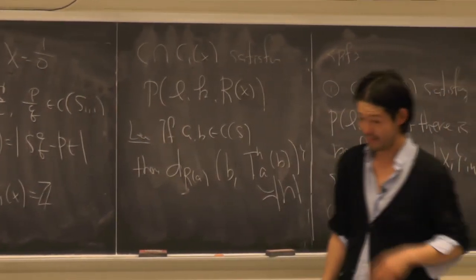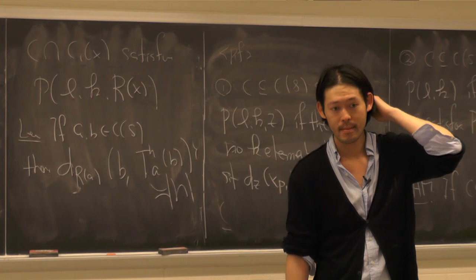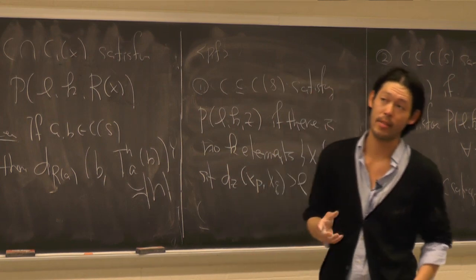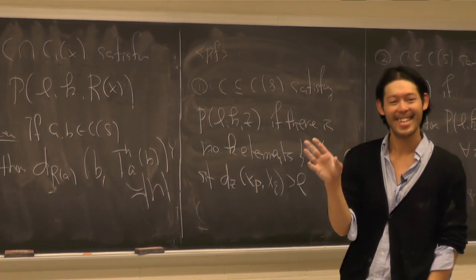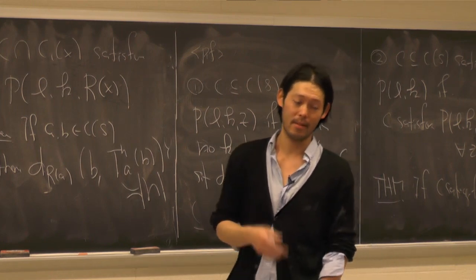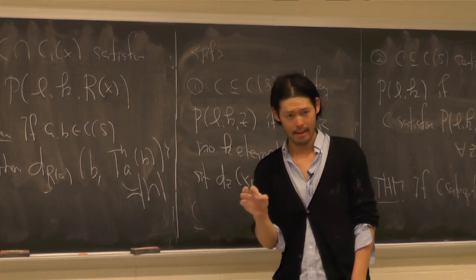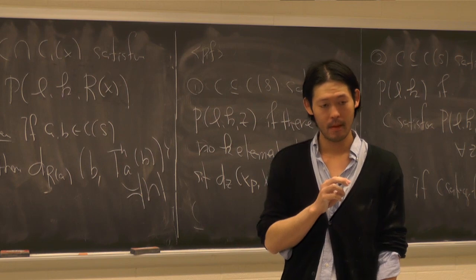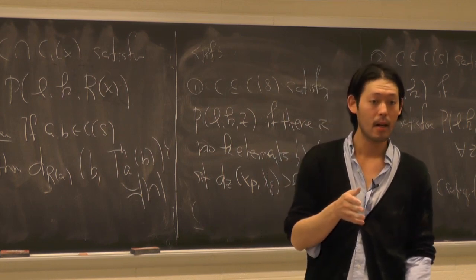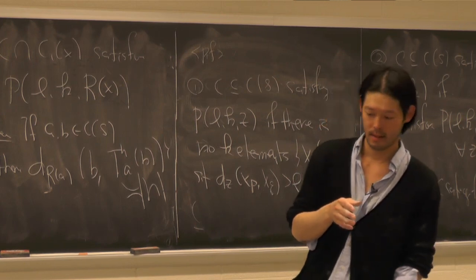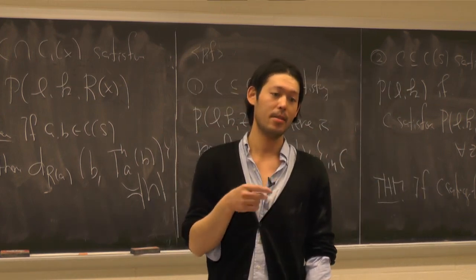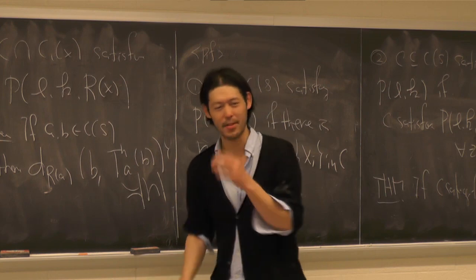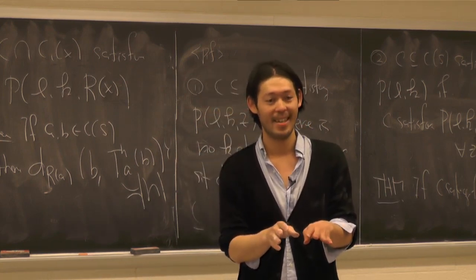Does this result help with algorithmically computing the collection of tight geodesics between two given curves? Yes — the number N is computable, and it only depends on k, l, and the complexity. To actually find the tight geodesic between two given curves: let me start with distance two and show how to do distance three; we can talk separately about this.